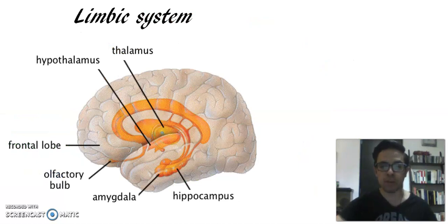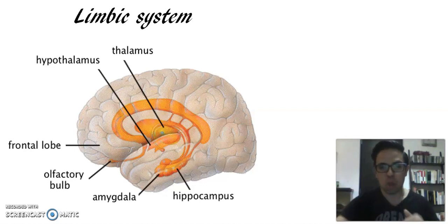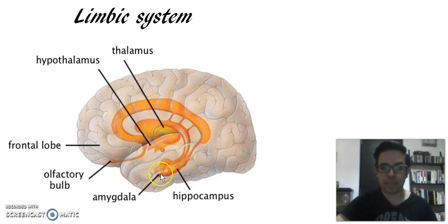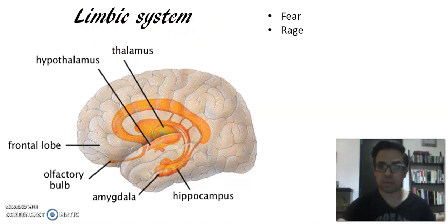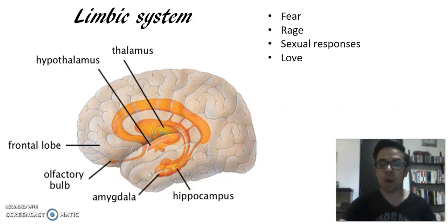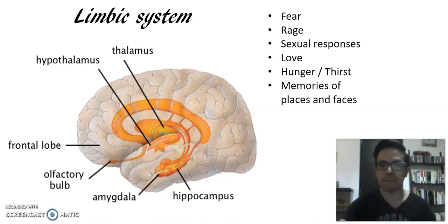Finally, we're going to see a very special system inside the brain structure known as the limbic system. It is formed by the hypothalamus, the thalamus, the hippocampus, and the amygdala. These four parts together form the limbic system and it has a very special function: controlling the fear response, rage, sexual responses or sexual desire, feelings of hunger, thirst — very basic needs in the human body — and the memory of places and faces.